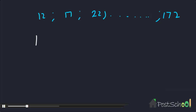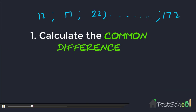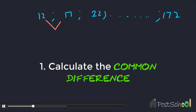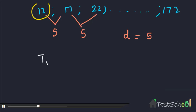Now that we know we want tn, let's find it. We have the general formula: tn = a + (n-1)d. The first thing we need is the difference: 17 minus 12 equals 5, and 22 minus 17 also equals 5. So our difference d equals 5, and a equals 12.